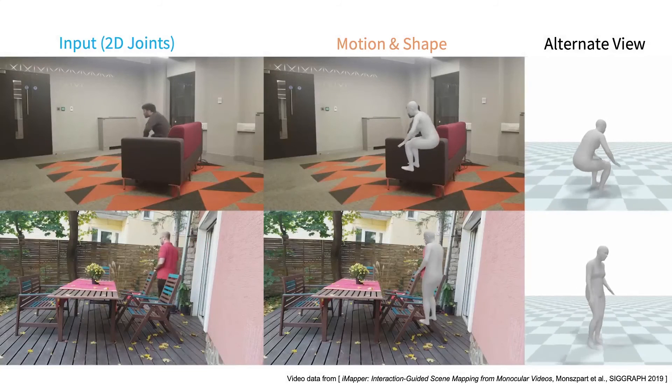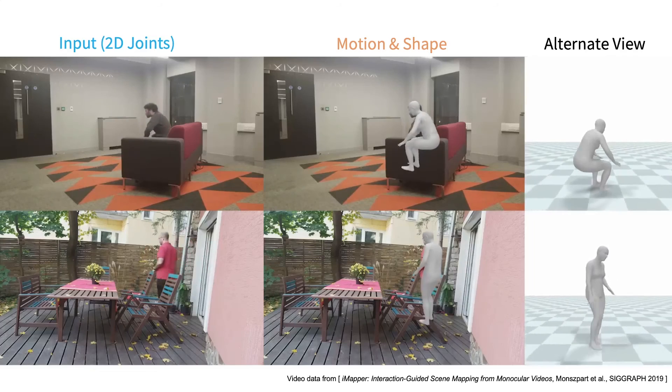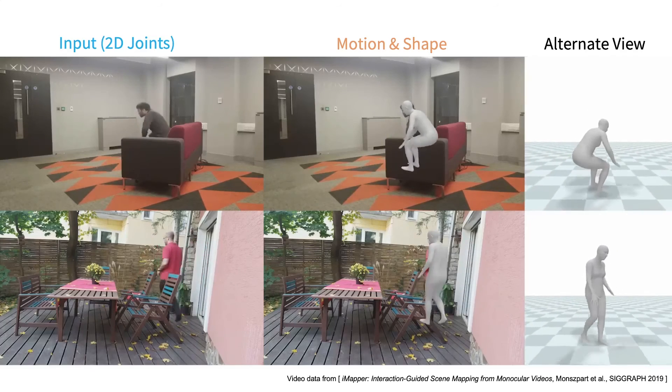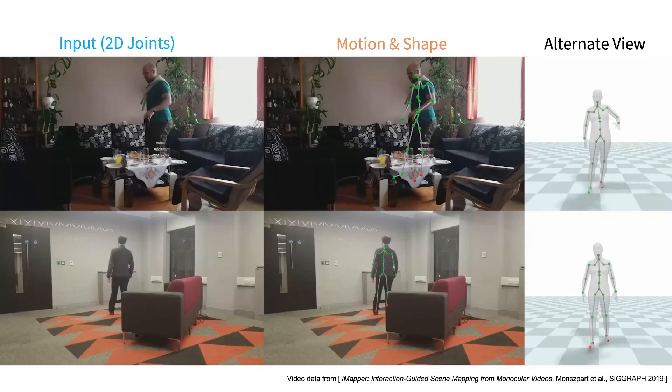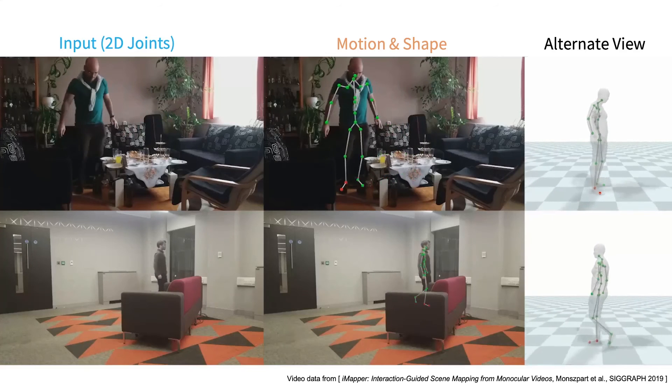Next, our model is evaluated on RGB inputs by fitting to 2D joint detections. Despite heavy occlusions with the environment, sitting and walking motions are successfully reconstructed. Furthermore, ground contacts are accurately recovered even when feet are entirely occluded.